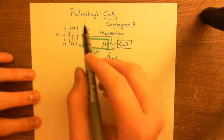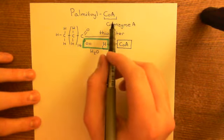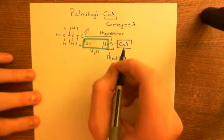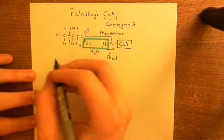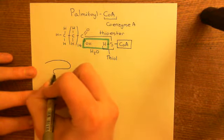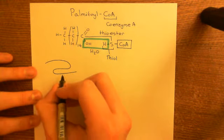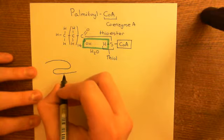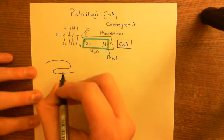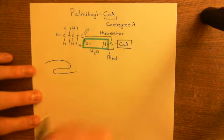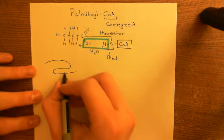Palmitoyl coenzyme A molecules are used to transfer a palmitoyl group onto cysteine residues within a polypeptide. Not every cysteine gets palmitoylated — certain specific cysteine residues will receive palmitoyl groups.